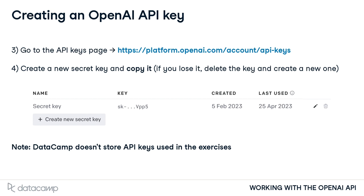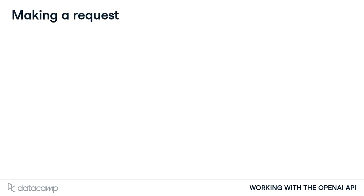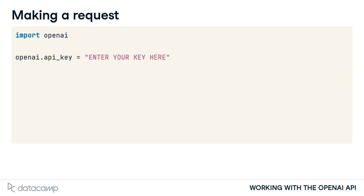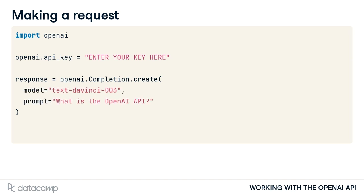Let's make our first API request. There are several ways to interact with an API, but in this course, we'll use OpenAI's own Python library due to its friendlier syntax. We assign our API key to OpenAI dot API key, which is used to authenticate our request. We create a request to the completions endpoint, which is used for completing a text prompt, by calling the create method on OpenAI dot completion. Inside this method, we specify the model and the prompt to send to it.